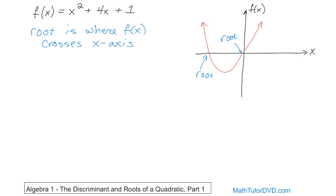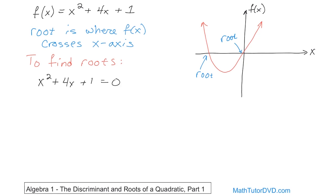So if this is the function in question, to figure out what the roots are — just the crossing points of the function f of x on the x-axis — all you do is set this function, x squared plus 4x plus 1, equal to zero.